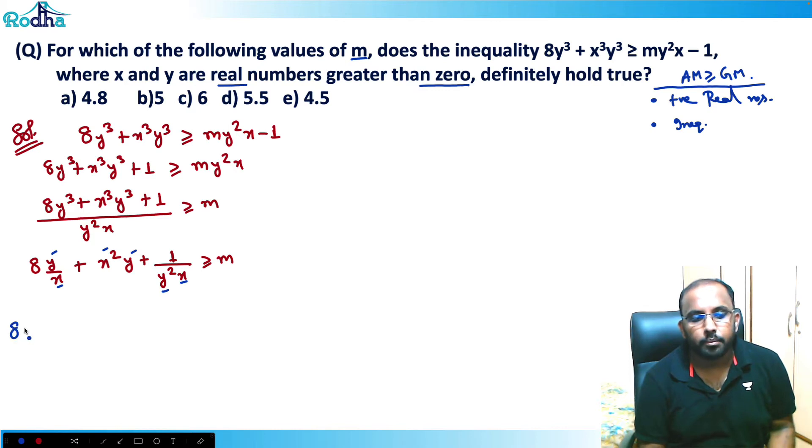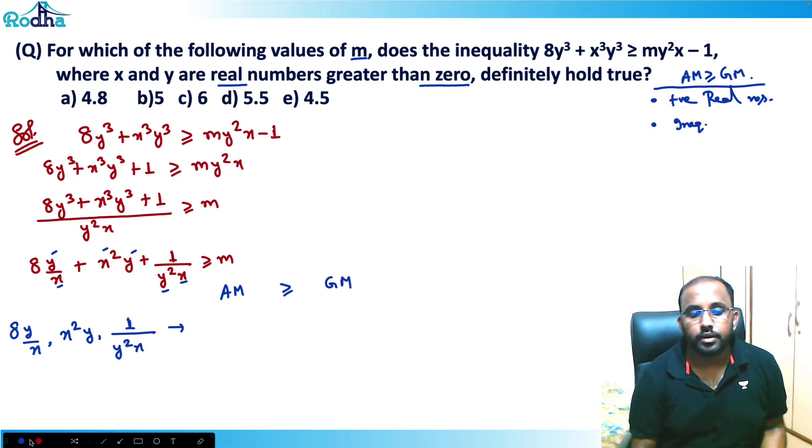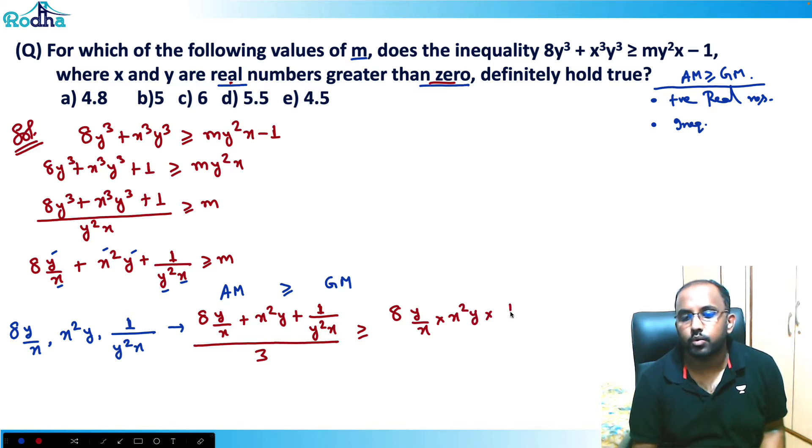So my three numbers are 8y/x, x²y, and 1/y²x. For these three numbers, their arithmetic mean will always be greater than equal to the geometric mean. And these three numbers, AM-GM is always applied on the positive values, positive real numbers. So their AM will be (8y/x + x²y + 1/y²x) divided by 3 is greater than equal to GM. That is if I multiply this, 8y/x into x²y into 1/y²x, and this is basically cube root, so power 1/3 I can put here.